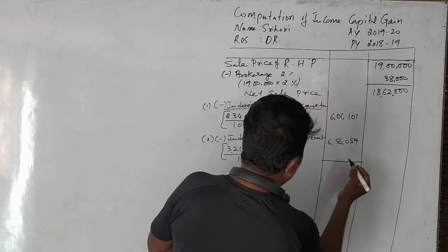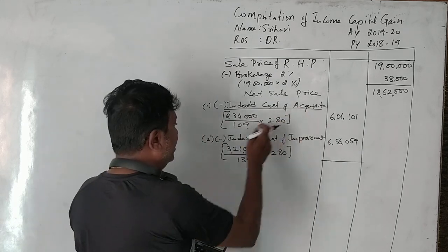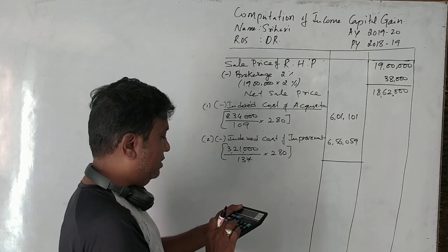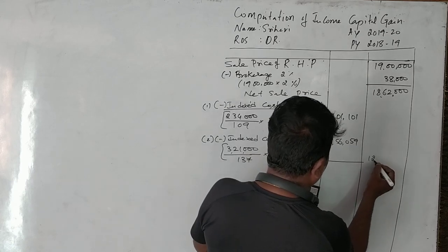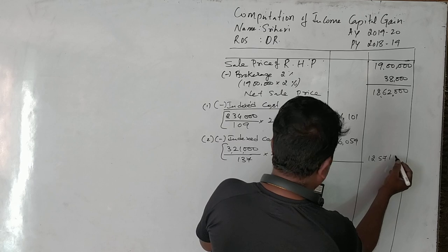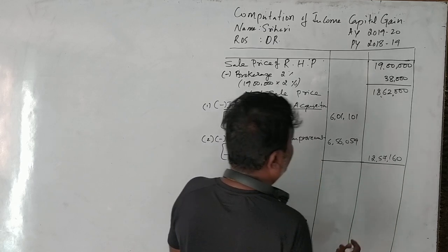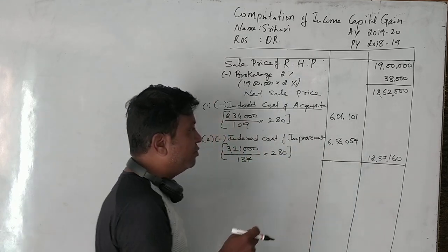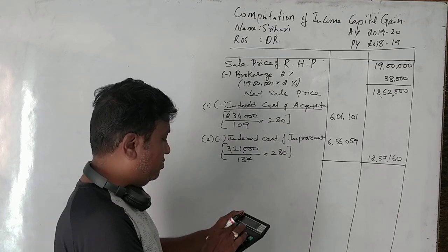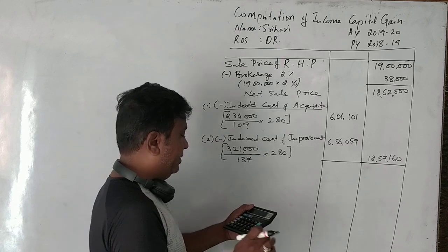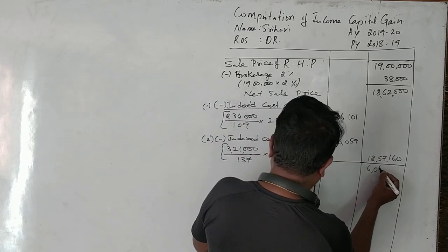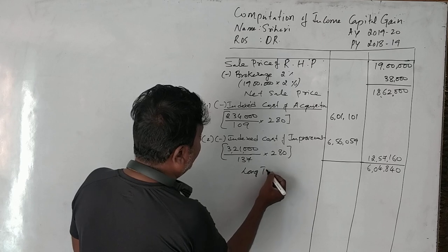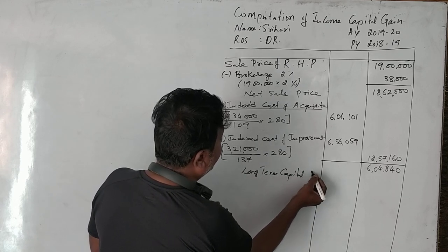The total of indexed cost of acquisition and indexed cost of improvement comes to Rs. 12,57,160. The net sale price is Rs. 18,62,000 minus Rs. 12,57,160, giving a capital gain of Rs. 6,04,840. Wait — this is Rs. 6,40,840, and this is called long-term capital gain.